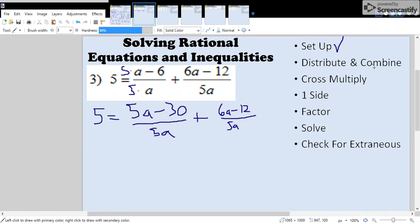Step two, we're going to distribute and combine like terms. There's no negative sign, so there's no distributing. Combining like terms, we have 5a plus 6a is 11a. And then negative 30 plus negative 12 is negative 42. And then the two denominators become one thing, just 5a. And then that equals 5. So we're done with the second step.